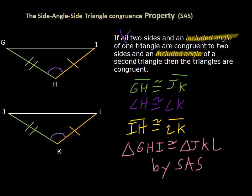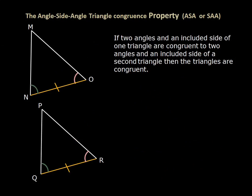So then we write: triangle GHI is congruent to triangle JKL by Side-Angle-Side. Let's move on to the next property: Angle-Side-Angle.